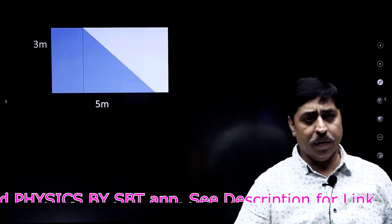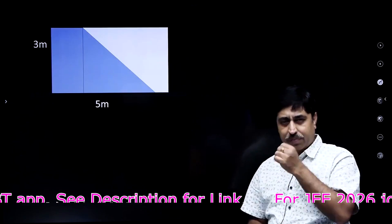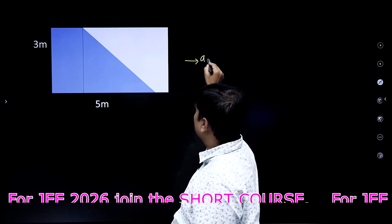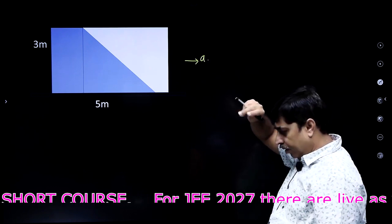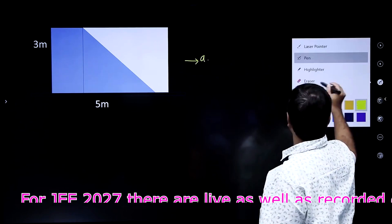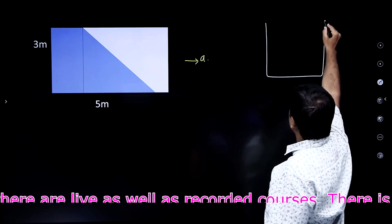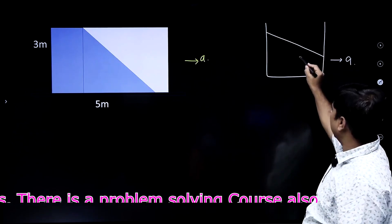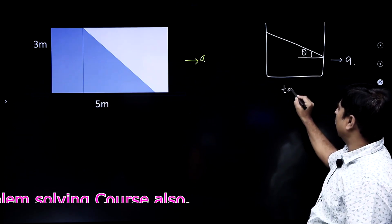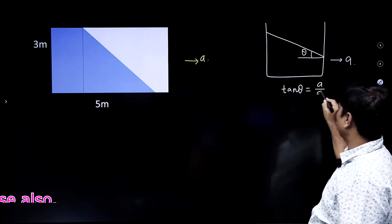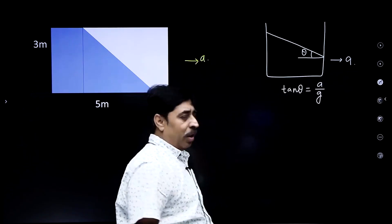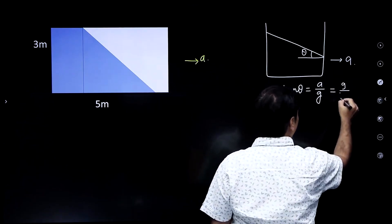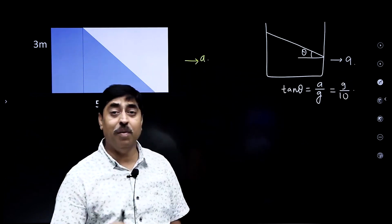The shape of the entire water volume inside the tank may become inclined. As you know, if water is filled in a tank and the tank is given an acceleration a, the liquid surface gets inclined with the horizontal and the inclination angle has tan θ = a/g. In this particular question, the value of a is 9, so tan θ will become 9/10.